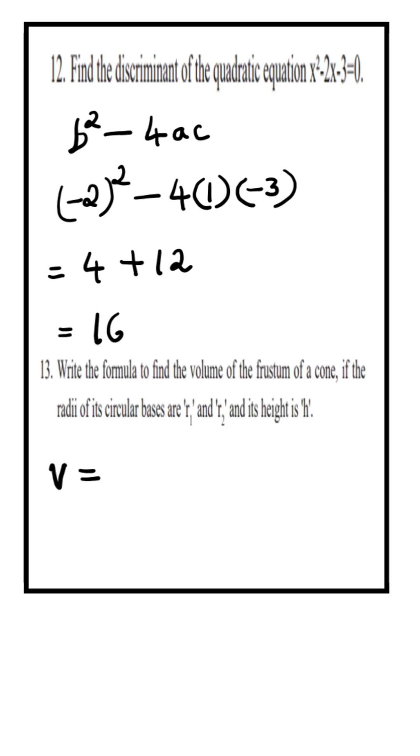Formula for the volume of the frustum of a cone is V equals 1 by 3 pi H into R1 square plus R2 square plus R1 into R2.